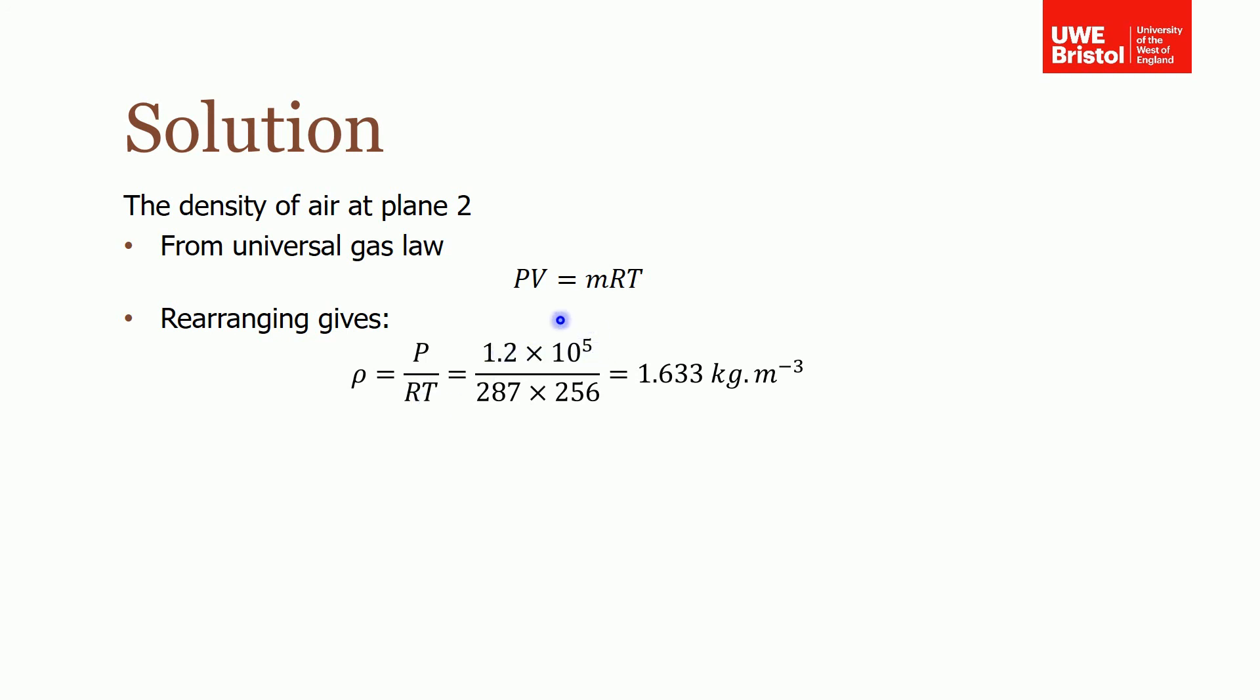Remember to convert your pressure into pascals, not leaving it in bar. Plugging this into your calculator should give a gas density of 1.6 kilograms per meter cubed.